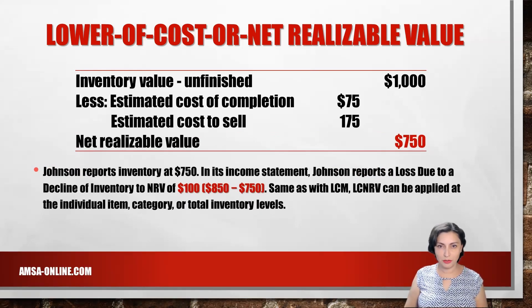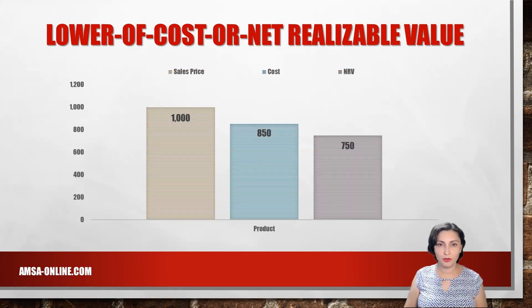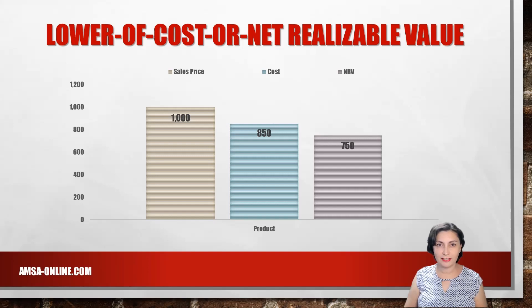Johnson's net realizable value is computed by subtracting the estimated cost of completion of $175 and the estimated cost to sell inventory of $175 from the inventory sales value of $1,000. The net realizable value is $750. The company reports inventory at $750. In its income statement, Johnson reports a loss due to decline of inventory to net realizable value of $100, which is $850 less $750.